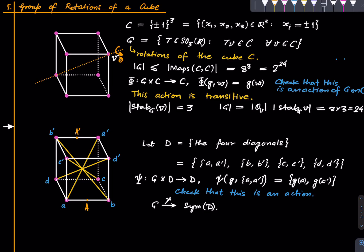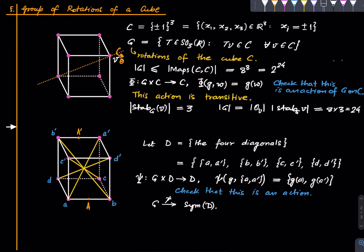So the group of rotations of the cube is isomorphic to the symmetric group on four letters, S4. This is a very nice result and demonstrates an application of the orbit-stabilizer theorem. Thank you for listening, and I will see you next time.